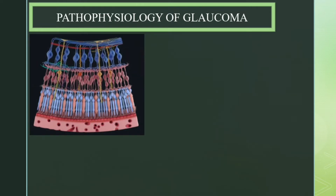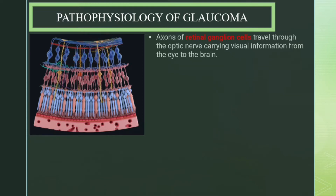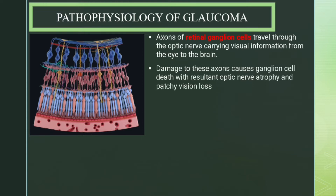Looking at a cross-section of the retina, you can see the choroid, the pigmented layer, the photoreceptor layer with rods and cones, the bipolar cell layer, and the ganglion cells. The axons of the ganglion cells form the optic nerve. These axons travel through the optic nerve carrying visual information from the eye to the brain. Damage to these axons causes ganglion cell death with resultant optic nerve atrophy and patchy vision loss.